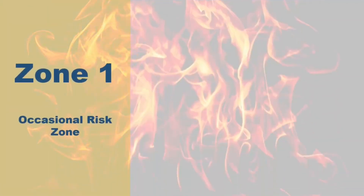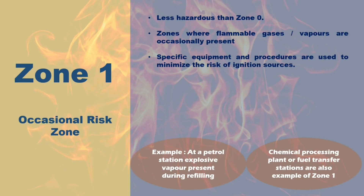Zone 1 - Occasional Risk Zone. Zone 1 is a step down in terms of danger but is still considered hazardous. Picture a petrol station as an example of Zone 1, where explosive gasoline fumes or vapors might be present, especially when people are filling up their cars. It's not a constant danger, but the occasional presence of gasoline vapors with a spark can lead to trouble. Areas like chemical processing plants or fuel transfer stations fall under this category, requiring specific equipment and procedures to minimize ignition sources.